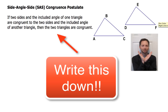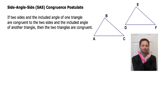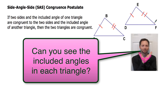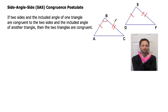For the side-angle-side congruence postulate, if two sides and the included angle of one triangle are congruent to two sides and the included angle of another triangle, then the two triangles are congruent. So if side AB is congruent to side DE, and side BC is congruent to side EF, the included angle is the one joined by those two sides — that would be angle B in triangle ABC and angle E in the other triangle. We could then write: triangle ABC is congruent to triangle DEF. We'll practice identifying the included angle because some people have difficulty with that.